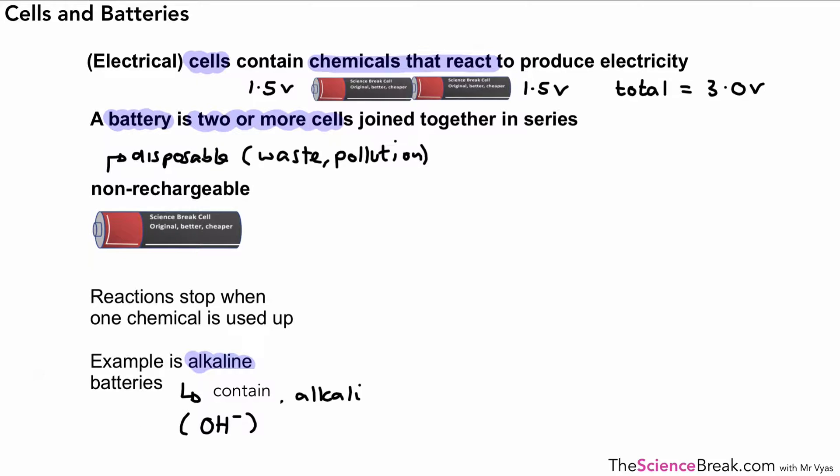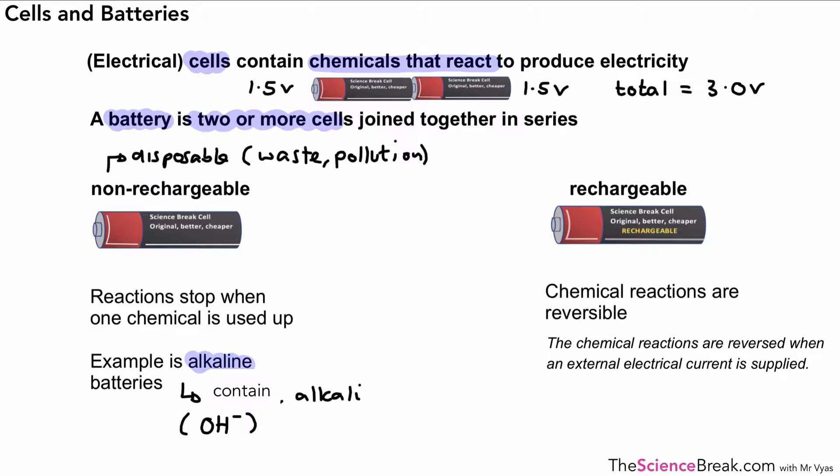Then the other type of cell that we have is the rechargeable one, often found in mobile phones and things like that, but you can also buy them in the shop. The chemical reactions that produce electricity are actually reversible in rechargeable batteries, so the chemical reactions are reversed when an external electric current is supplied.